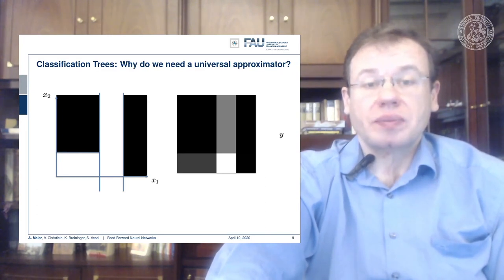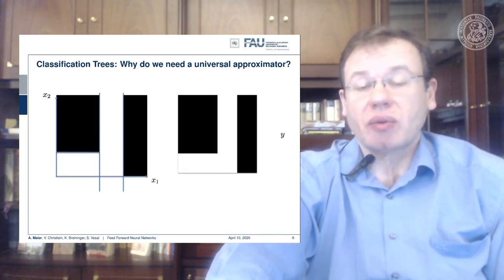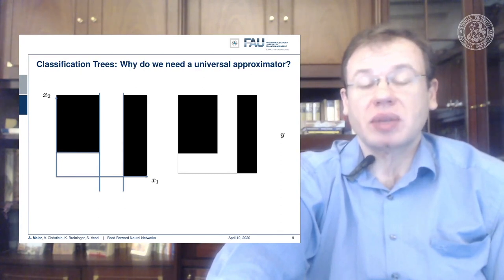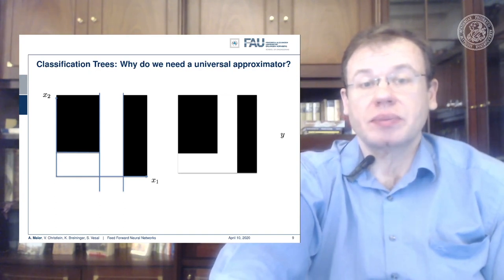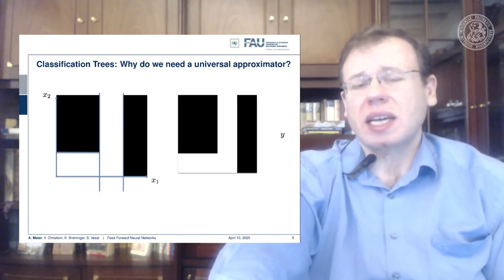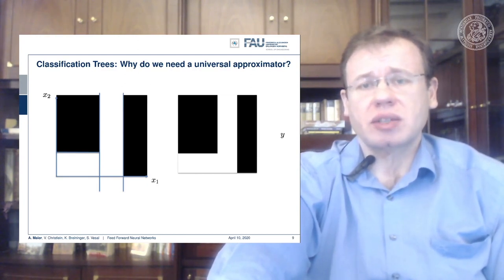So what else could we do? Well, if we want this, we could, for example, add a second non-linearity because then we would get exactly the solution that we desire. You see, maybe one layer is not very efficient in terms of representation.